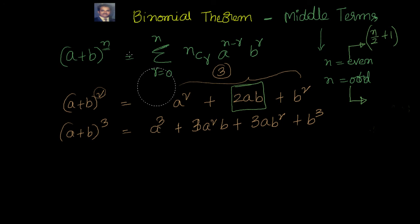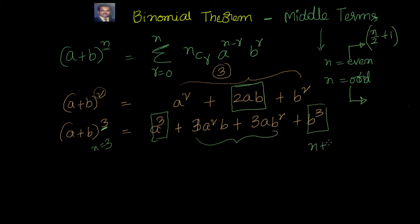Now let's check for odd n. If n is 3, there are 4 terms, and removing the first and last leaves 2 middle terms. Those terms will be at positions (n+1)/2 and (n+3)/2. Checking: n = 3 gives positions 2 and 3. There is another easy way to remember: n+2 by 2 for even, and (n+1)/2 and (n+3)/2 for odd.